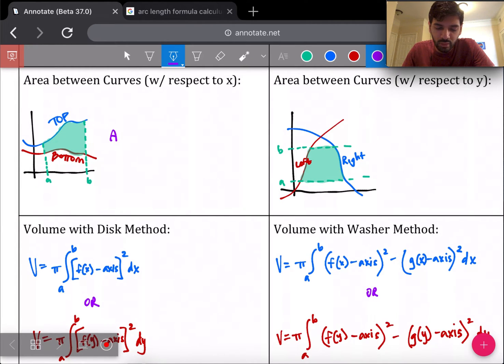The integral for an area between curves with respect to X is going to be top minus bottom and your bounds are A and B, which are those X values right there. So actually on the integral, I'll put X equals A and X equals B because those are X values. They're on the X axis A and B are. So just know that this is in terms of X because everything is in terms of X, your bounds, your functions. So let's say the top was F of X and the bottom was G of X. It'll be F of X minus G of X dx at the end. So notice how everywhere in this integral you see X's. F of X, G of X, DX, X equals A, X equals B in your bounds, all in terms of X. This is a top minus bottom.